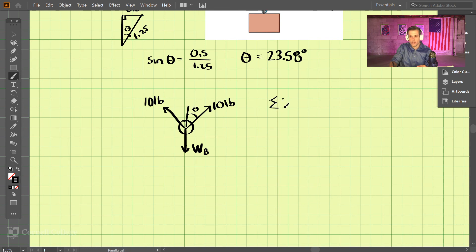So let's sum the forces in the y direction and set those equal to 0. So downward, we have WB, that's the mass of the block B that we're trying to find, and upward, we have 2 times the 10 pounds, but it's just a component of that 10 pounds. So it's cosine of that angle, 23.58 degrees equals 0.